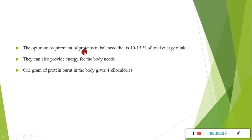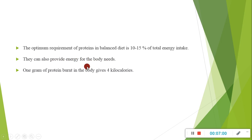The optimum requirement of protein in a balanced diet is 10 to 15% of total energy intake. We discussed that carbohydrates cover almost 50 to 70% of a balanced diet. Proteins can also provide energy for the body's needs. One gram of protein burned in the body gives 4 calories.